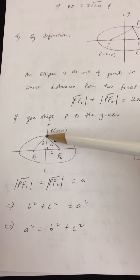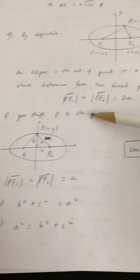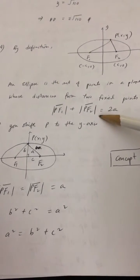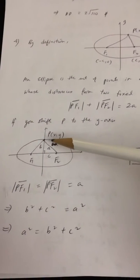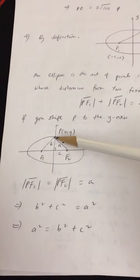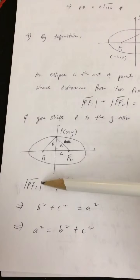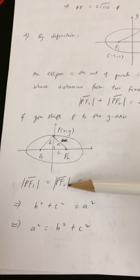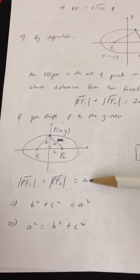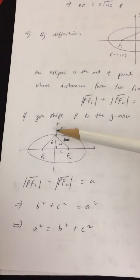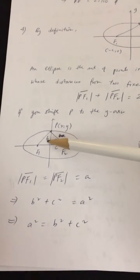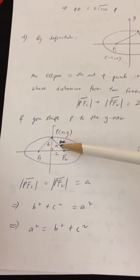By definition, the same definition applies: PF₁ + PF₂ = 2A. When you shift P to the y-axis, PF₁ equals PF₂. Dividing 2A by 2, each distance equals A. So PF₁ = A and PF₂ = A.